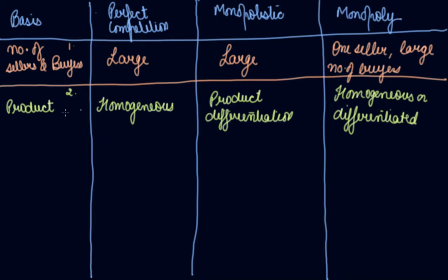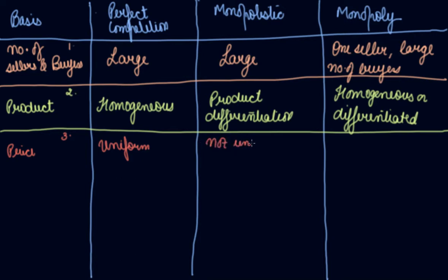The third differentiation we have is price. Here the price is constant, the uniform price. Not uniform in monopolistic competition because of product differentiation.